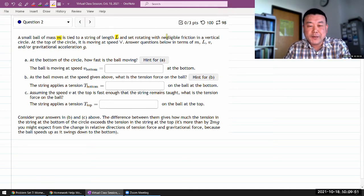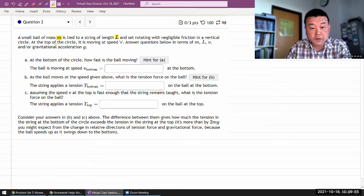It's tied to some string of some length and is set rotating. Checking grammar. With negligible friction in a vertical circle. At the top of the circle, it is moving at speed - oh, that's a typo. I got to fix that. I'll do that after I do this question.